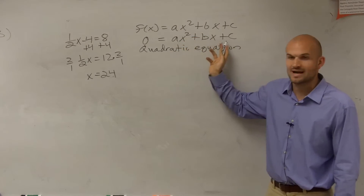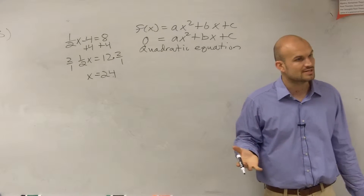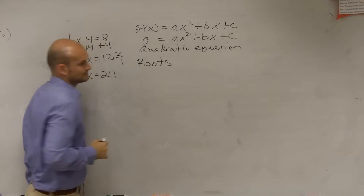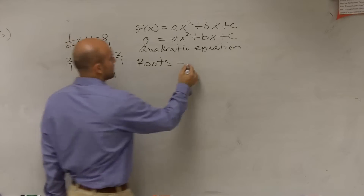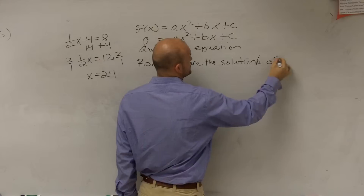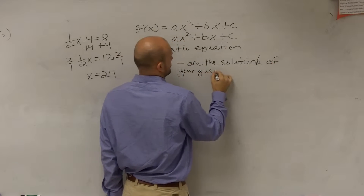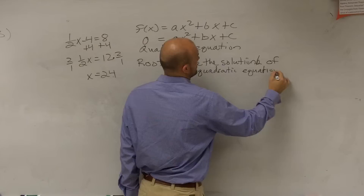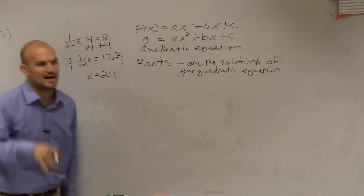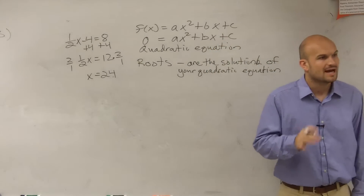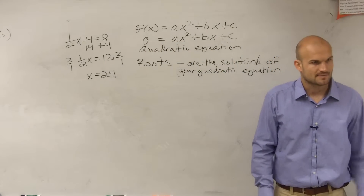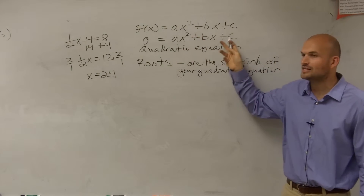Solutions take on some different names. The first one is what we call the roots. The roots of a quadratic equation are the solutions of a quadratic equation. A, b, and c are numbers — they don't matter. But when I say find the roots, I want you to find the solutions — the values of x that are going to make this equation equal to 0. That's exactly what I'm saying.